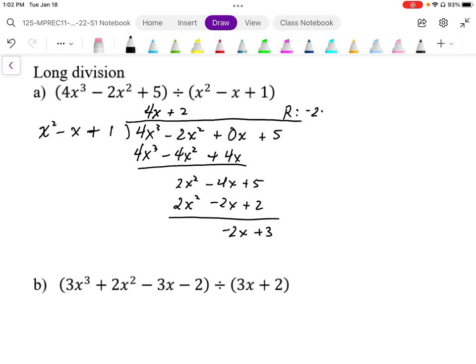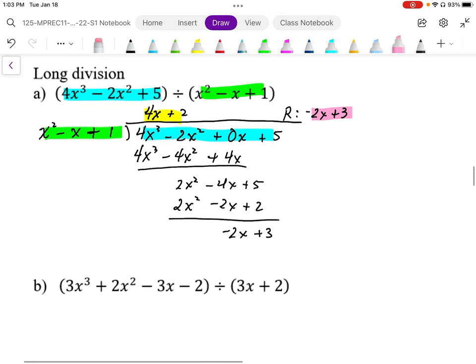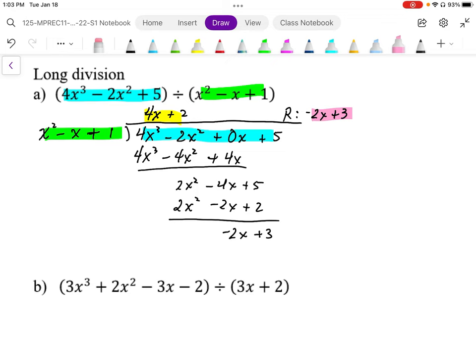This is our quotient, this is our divisor, we call this a dividend—the thing that's being divided—and then we have our remainder part. To rewrite this in a division statement, we can write it this way.